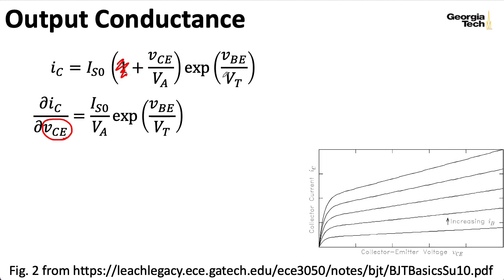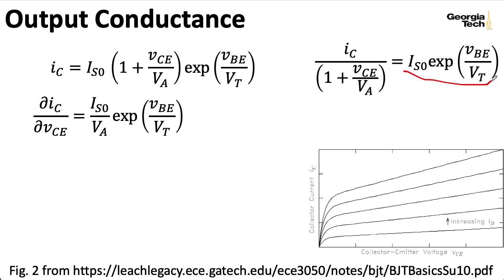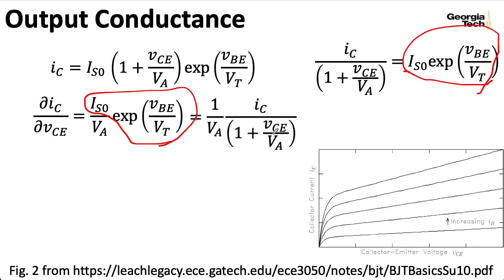So this business with the one here, that winds up going away because that's just a constant, and we're left taking the derivative of the expression, including this VCE factor. So I'm just left with all the stuff that's not VCE. Now let me do a trick where I'll take this expression and just rearrange it. So I'll write it as IS0 times this exponential form equals IC divided by this 1 plus VCE over VA term.